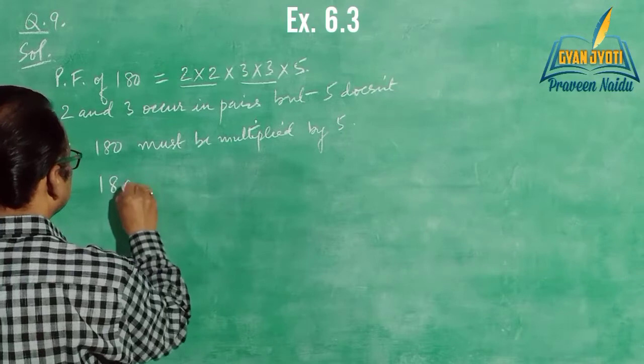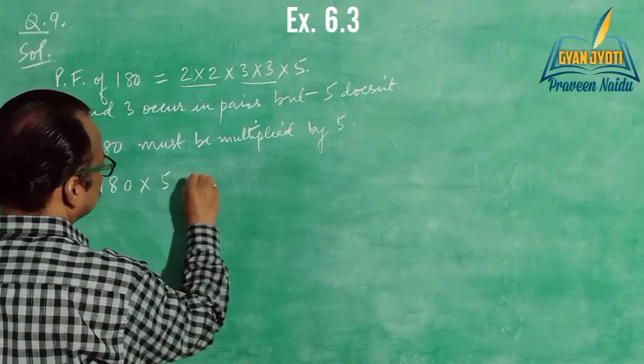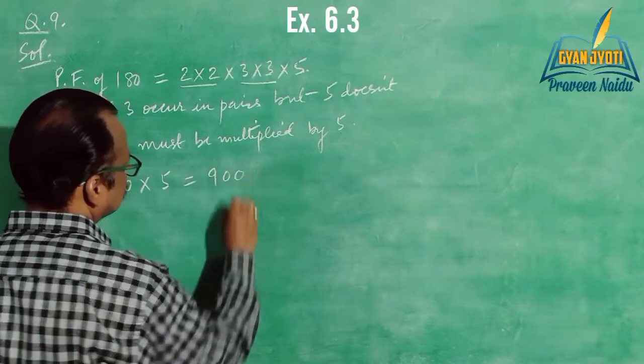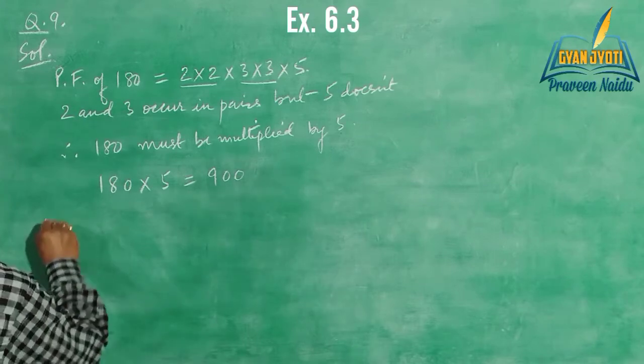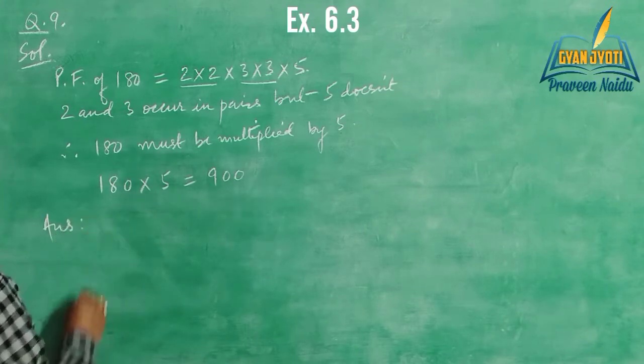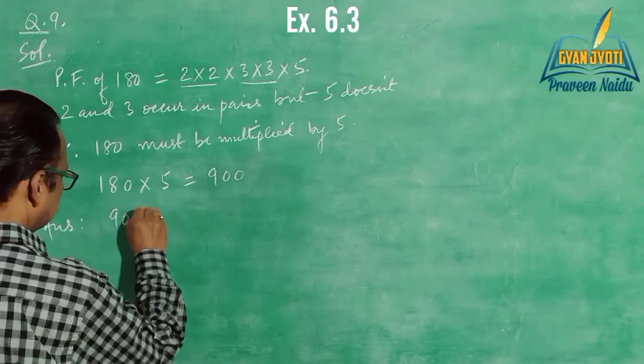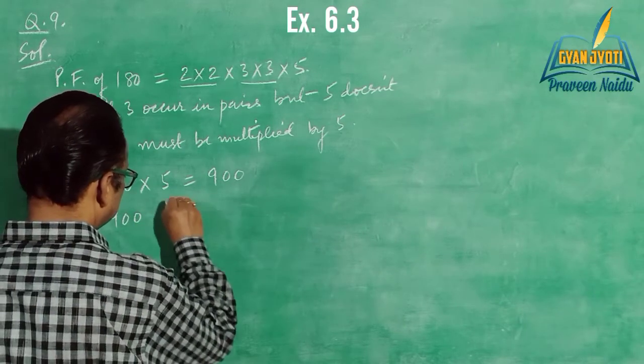The product is 900. So, 900 is the required number that is divisible by each.